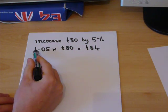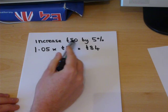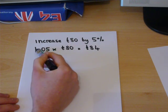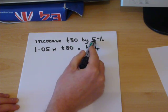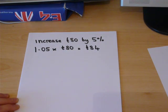So, to recap, the 1 represents the original amount, 100%, onto which has been added a 5%, making 105%.